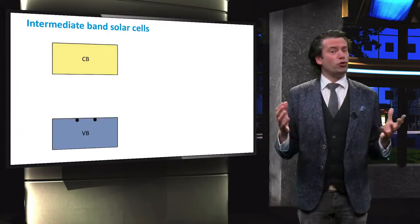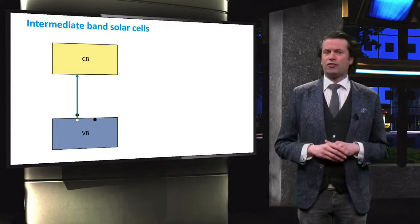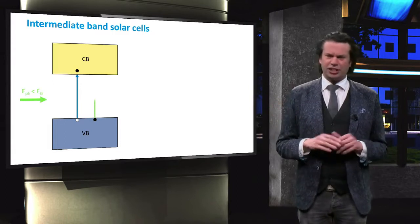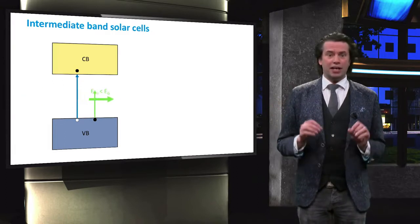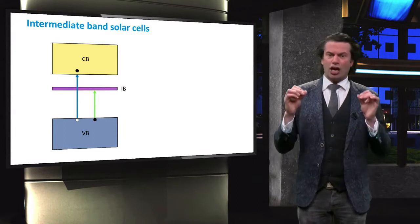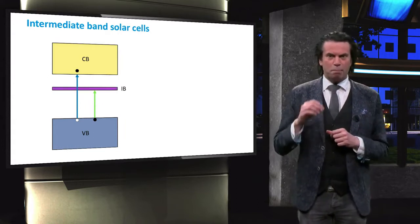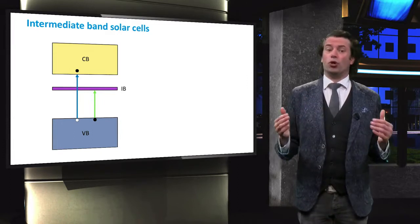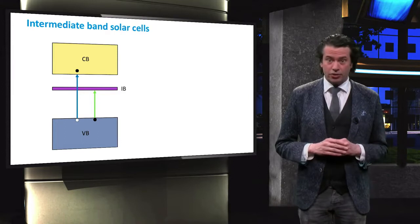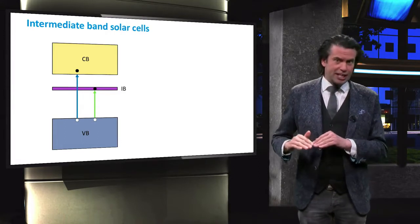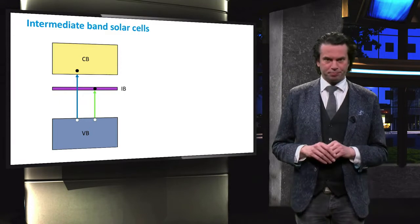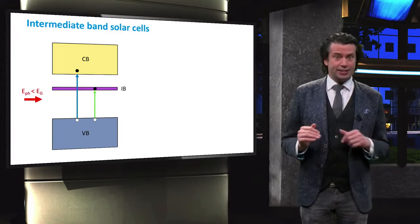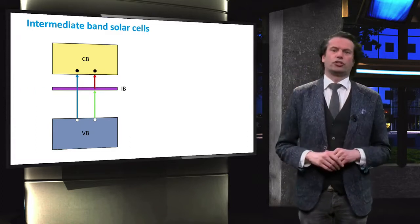Conventionally, photons with sufficient energy can excite an electron from the valence band into the conduction band, and photons with insufficient energy cannot. In intermediate band cells, energy levels are created artificially in the bandgap of the absorber material. Therefore, photons with energies below the bandgap can excite an electron from the valence band into the intermediate band. A second low energy photon is required to excite the electron from the intermediate band into the conduction band.